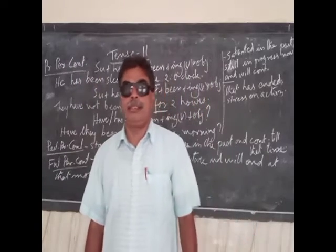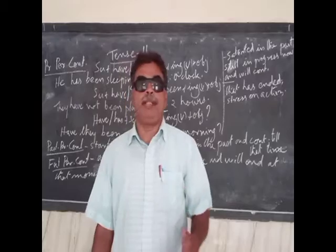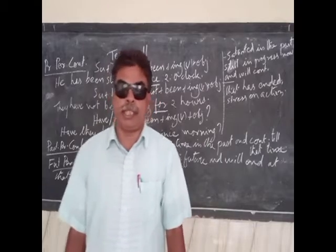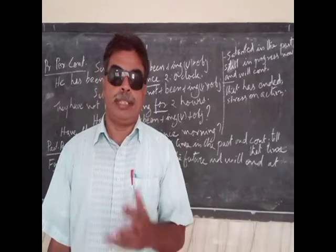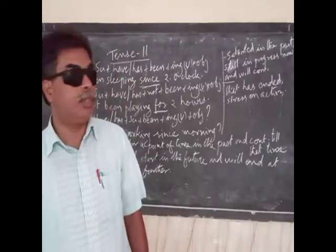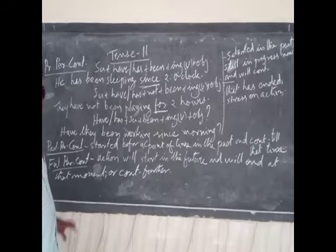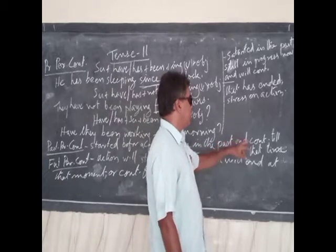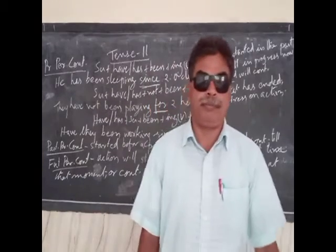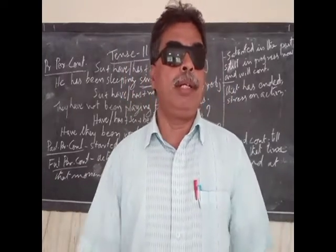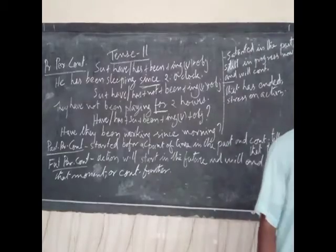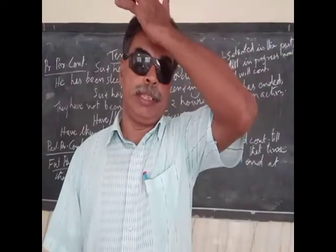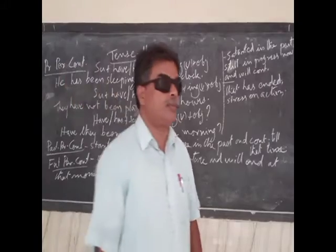The question form is: had plus subject plus been plus ING verb plus object. We can use past perfect continuous to talk about an action that started before a point of time in the past and continued until that time in the past. For example: I went to meet one of my friends in the hospital — he had an operation and was admitted there, resting after the operation.